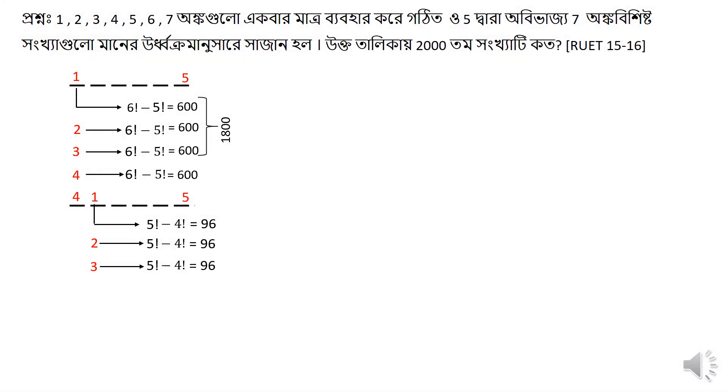We have to start the 3rd year, which is 5 factorial minus 4 factorial equals 96.